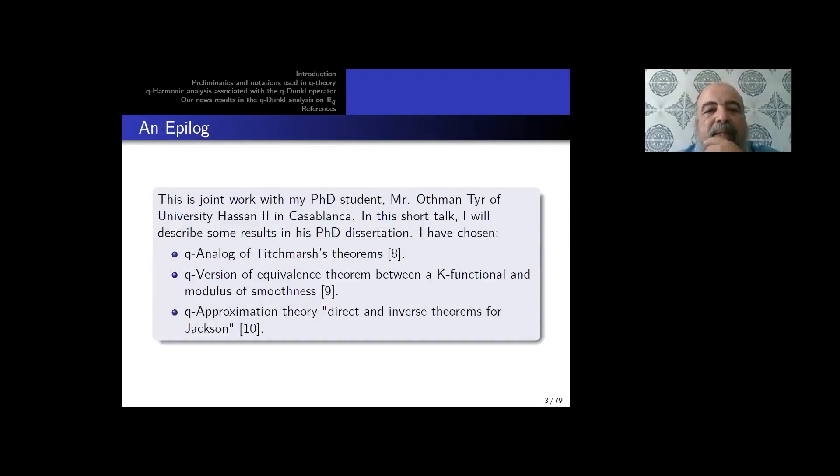This is joint work as I said before with my PhD student at our university. In this short talk, I will describe some results in his PhD dissertation. After the Q-analog of Titchmarsh, the second is the Q-version of some equivalence between the K-functional and modulus of smoothness, and the last result is some new catalog of affirmation.